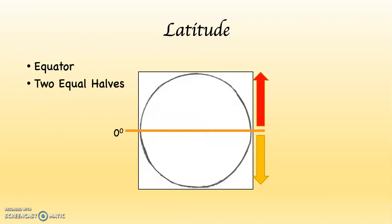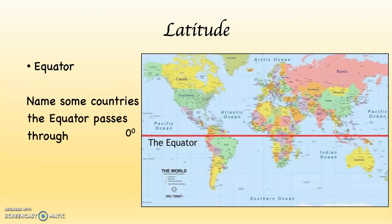The equator has another job besides being the starting point for latitude — it also splits the Earth into two equal halves. The word 'equator' means equal. Take a look at this map: you can see the equator going right through the middle as that thick red line. Countries it passes through include Ecuador (named after the equator), Colombia, Brazil, Gabon, Congo, the Democratic Republic of Congo, Uganda, Kenya, a tiny bit of Somalia, and Indonesia.